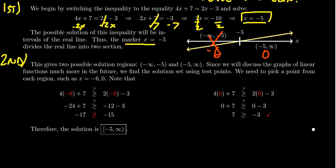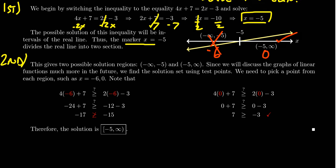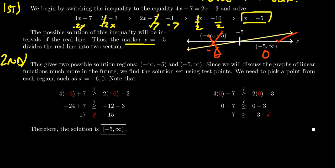Just because one side doesn't work doesn't automatically mean the other side does — we should verify with another test point. We try x equals 0. Plugging in 0 on the left: 4 times 0 is 0, plus 7 is 7. The right-hand side: 2 times 0 minus 3 is negative 3. Sure enough, 7 is greater than negative 3 — the inequality is satisfied. So numbers greater than negative 5 do satisfy the inequality, and negative 5 to infinity will be part of the solution set.